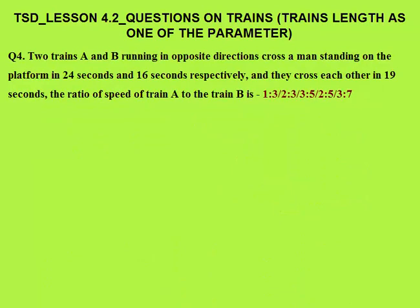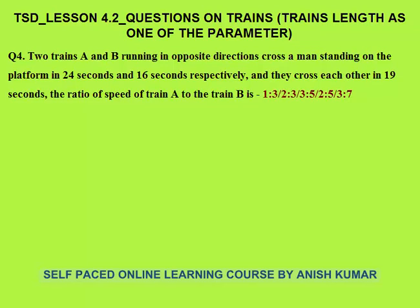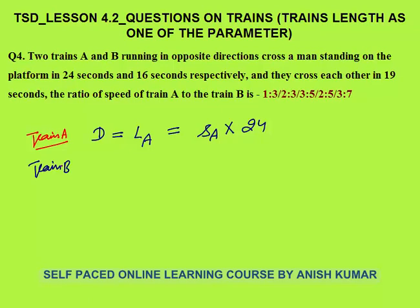Fourth question: two trains A and B running in opposite directions cross a man standing on the platform in 24 seconds and 16 seconds respectively, and they cross each other in 19 seconds. What is the ratio of speed of train A to speed of train B? When train A crosses a standing person, distance = LA = SA × 24. When train B crosses the same person, distance = LB = SB × 16.